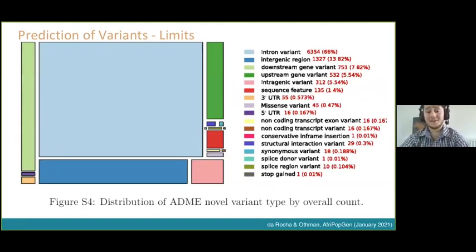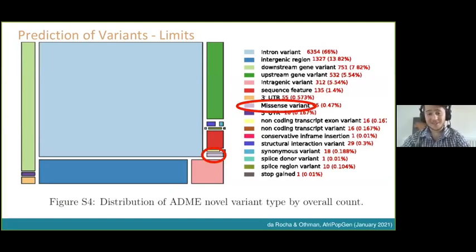Here's a distribution of our novel variants in terms of their type as classified by Variant Effect Predictor. The variants that come up most often in terms of functional prediction are missense variants, and this is the scale of missense variants in comparison to all the other novel variants we identified. That means there's a severe knowledge gap for any one of those other variant types that may have a functional impact but for which we don't have a fleet of tools ready to analyze — a lot of big research questions that will take global effort to investigate.